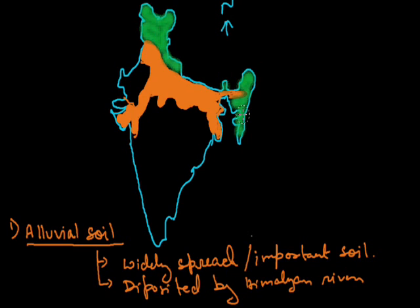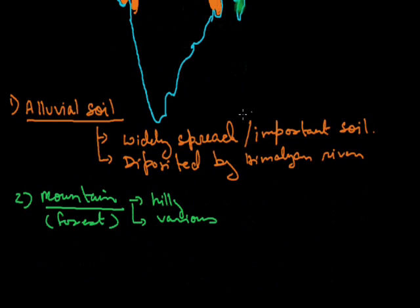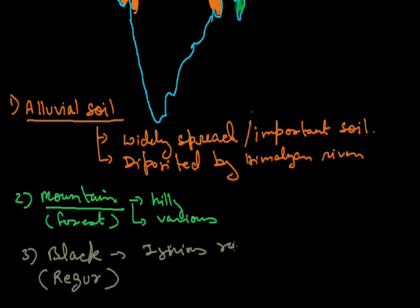Now let us come to another type of soil, and this is black soil. This black soil is also known as regur soil. Igneous rock is its parent rock.